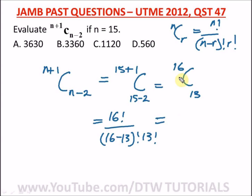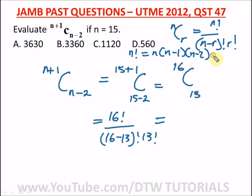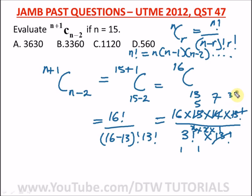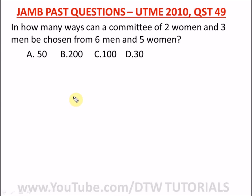Remember that n factorial expands as n × (n−1) × (n−2) × ... So we expand 16 factorial as 16 × 15 × 14 × 13 factorial, and 13 factorial cancels out. We're left with (16 × 15 × 14) divided by 3 factorial, where 3 factorial equals 3 × 2 × 1. Simplifying: 2 cancels into 14 giving 7, and 3 cancels into 15 giving 5, leaving 5 × 7 × 16 = 560. Our right option is option D.